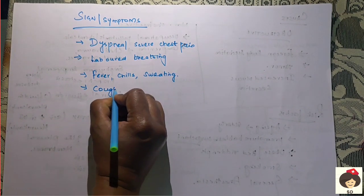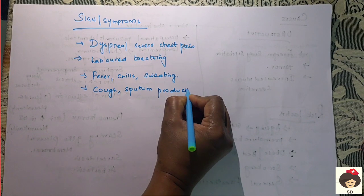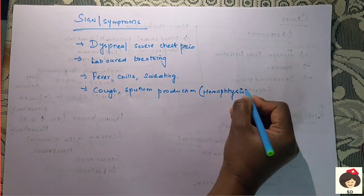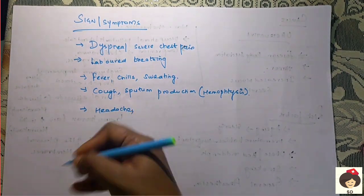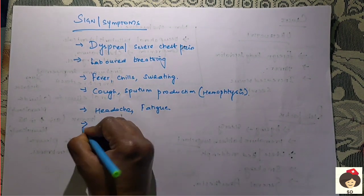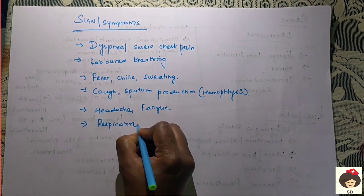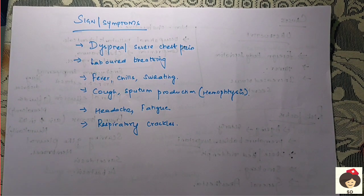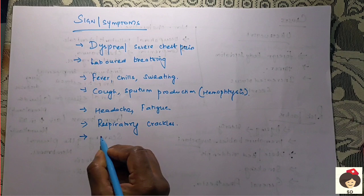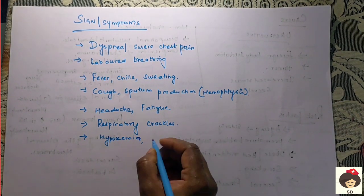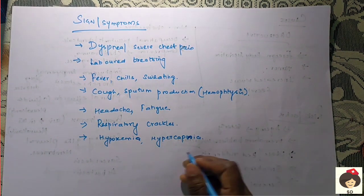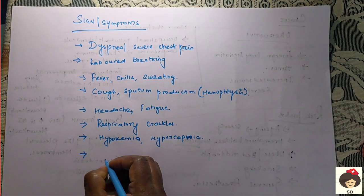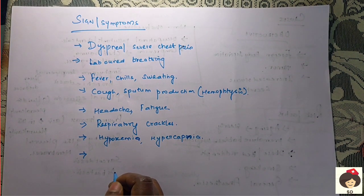If there is any increased mucus, there will be cough and sputum production. This sputum can sometimes be mixed with blood — blood in sputum is called hemoptysis. The patient can also have headache and fatigue due to the increased work of breathing. When you auscultate the respiratory area, you can hear respiratory crackles — abnormal sounds due to air beating on an obstructed tumor or foreign bodies. In severe cases, if the patient is not getting oxygenation, the person can go for hypoxemia (decreased oxygen in blood) and hypercapnia (increased carbon dioxide in blood) because gas exchange is not taking place.